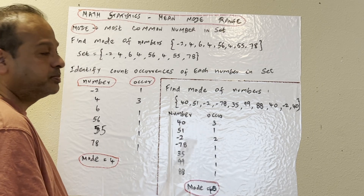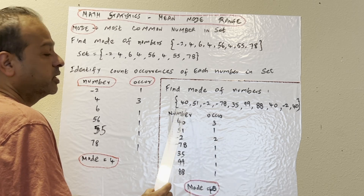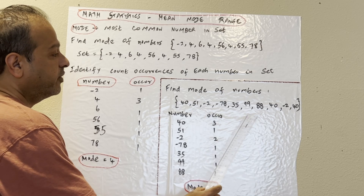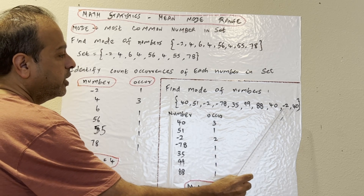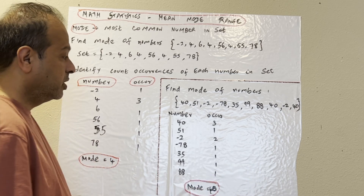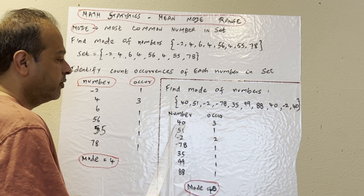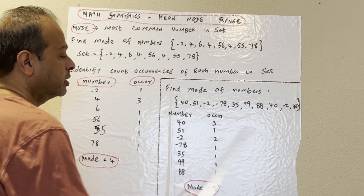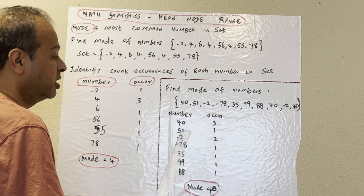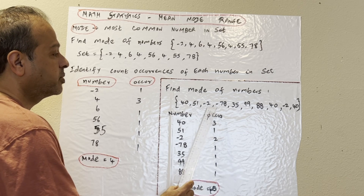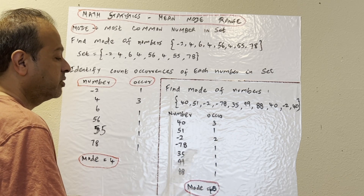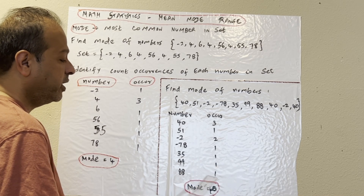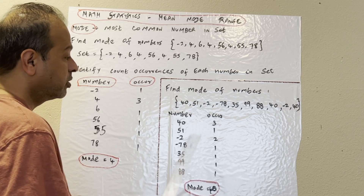Let's go to the next example. Find the mode of this set: 40, 51, negative 2, negative 2, negative 78, 35, 99, 88, 40, negative 2, 40. Looking at number and occurrences: 40 occurs 3 times, 51 occurs 1 time, negative 2 occurs 2 times, negative 78 is 1, 35 is 1, 99 is 1, 88 is 1 time. So the mode equals 40.